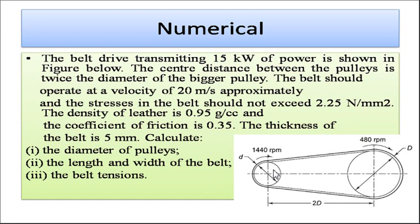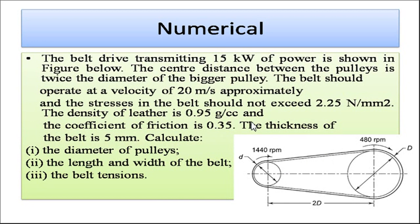There is one input pulley and one output pulley. The center distance between the pulleys is equal to two times the larger pulley diameter. The belt should operate at a speed of 20 meter per second. The stress in the belt should not exceed 2.25 Newton per mm square. The density of the leather belt is 0.95 grams per cubic centimeter and the coefficient of friction is 0.35 between the belt and the pulley. The thickness of the belt is 5 mm.